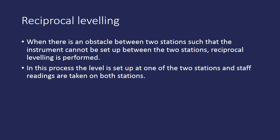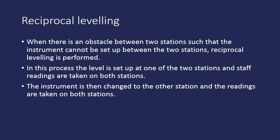In this process, the level is set up at one of the two stations and staff readings are taken on both sides. First, we set up the instrument near one station and take readings for both stations. Later, the instrument is shifted to the side of the next station and readings are taken again for both stations. The instrument is then changed to the other station and readings are taken on both stations.